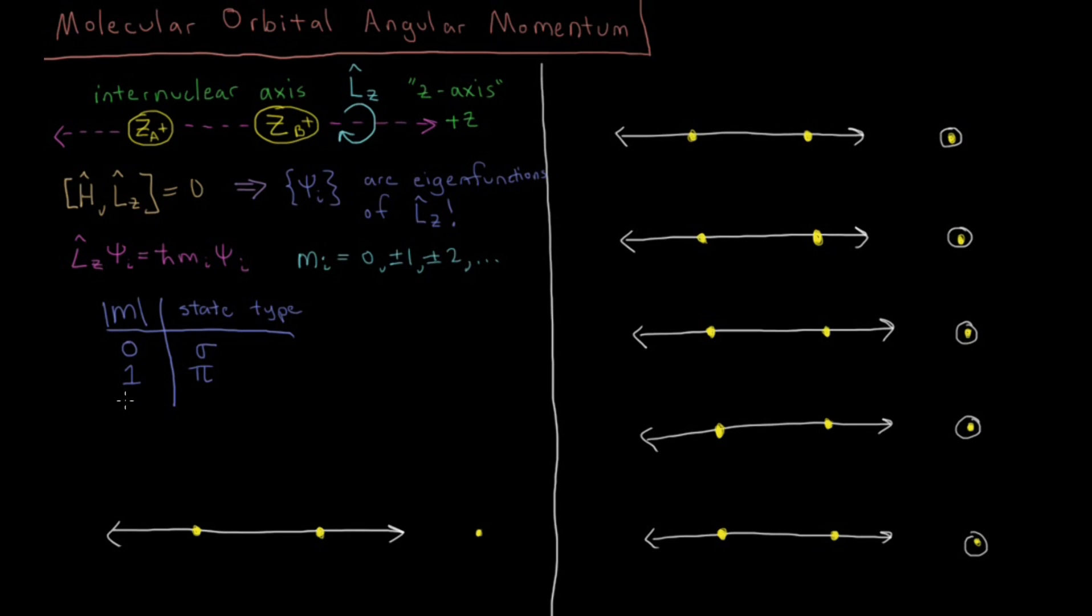But you can actually generalize this and go beyond that. You can have m equals 2 and form what we would call a delta bond. This generally doesn't occur unless you're deeper in the periodic table than we generally do in organic chemistry, but it's certainly possible. It's also conceptually possible to have phi bonds and beyond that.